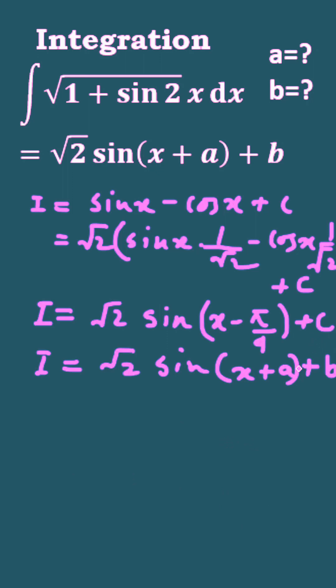Now just compare this with the previous one and you will get the value of a and b. So a will be minus pi by 4 and b will be a constant.